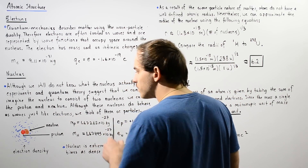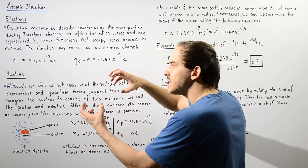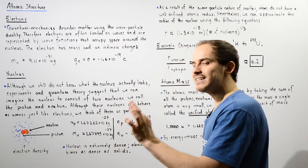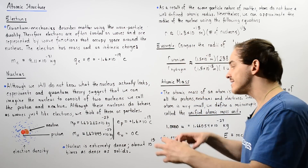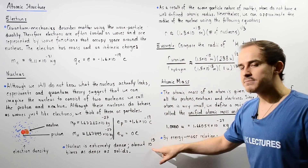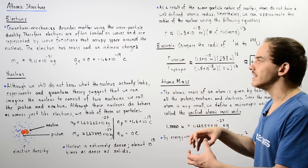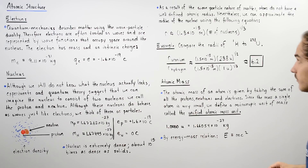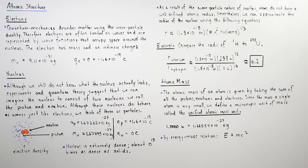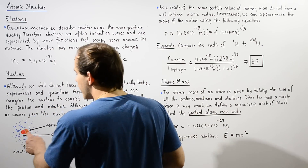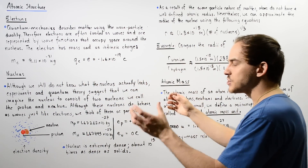Our neutron and proton create a very concentrated region known as the nucleus. In fact, the nucleus is extremely concentrated — extremely dense. It's about 1 times 10 to the 15 times as dense as a solid structure. As a result of the wave-particle duality of matter, atoms do not have a well-defined atomic radius because our electrons, protons, and neutrons are actually waves, making it very difficult to define what the radius of our atom is.